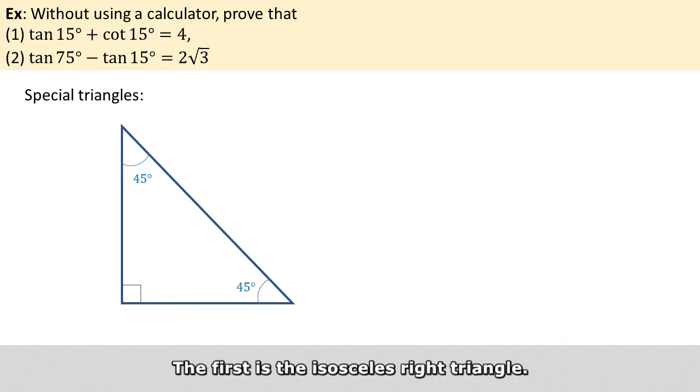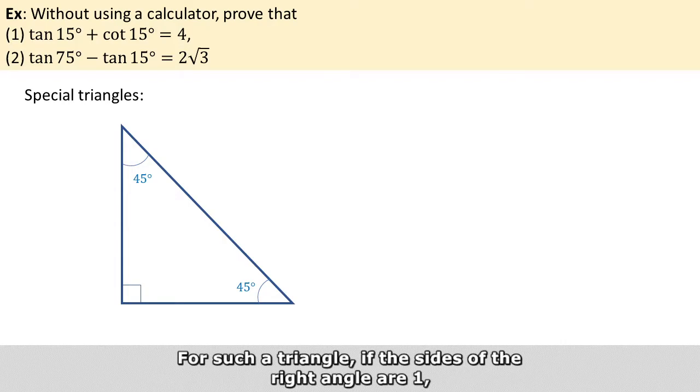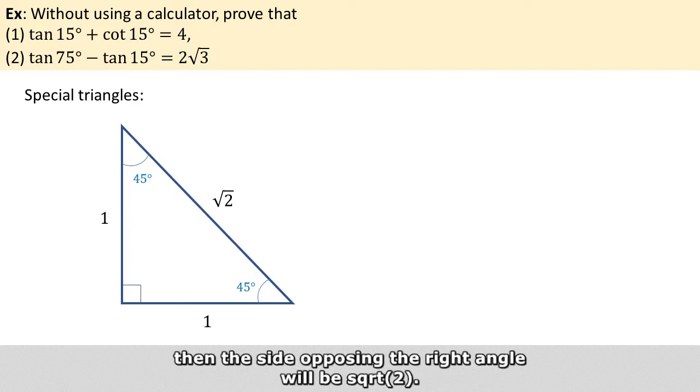The first is the isosceles right triangle. For such a triangle, if the sides of the right angle are 1, then the side opposing the right angle will be square root of 2.